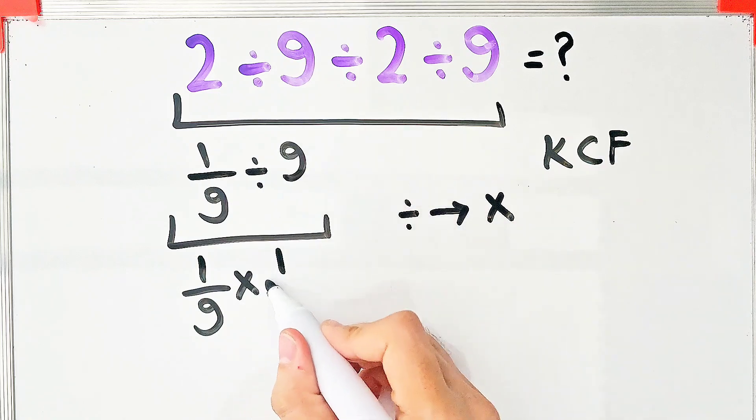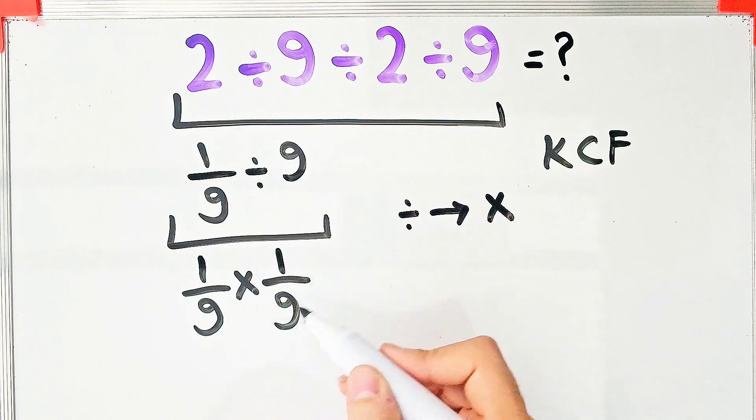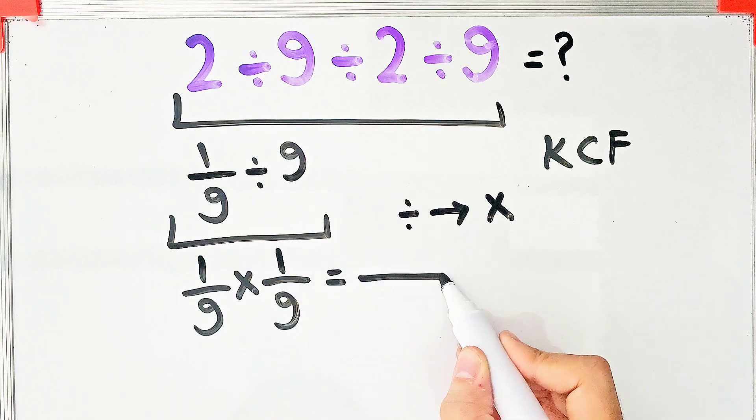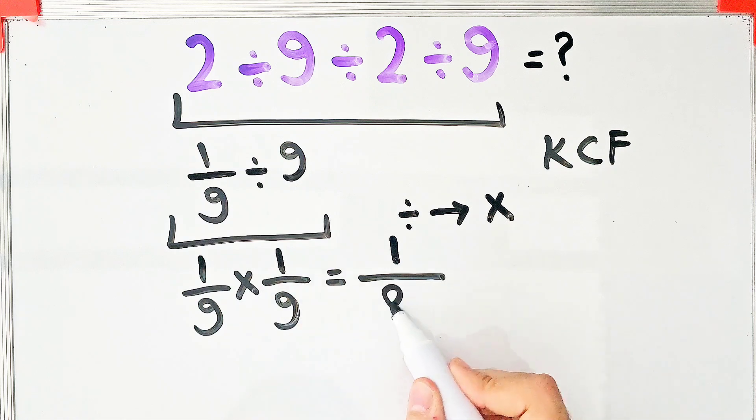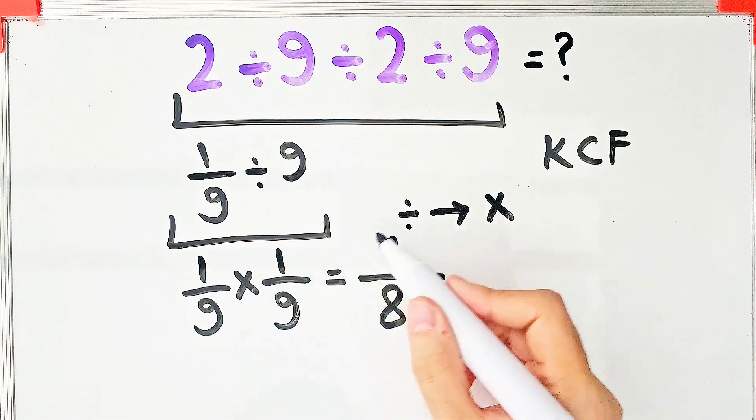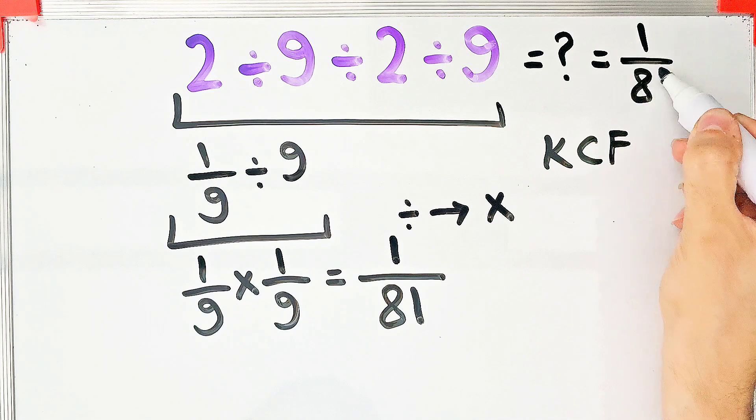Now we do the multiplications. 1 over 9 times 1 over 9. 1 times 1 equals 1. 9 times 9 equals 81. The final answer of this question equals 1 over 81.